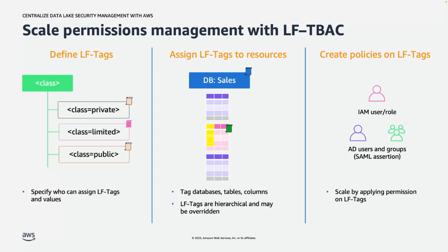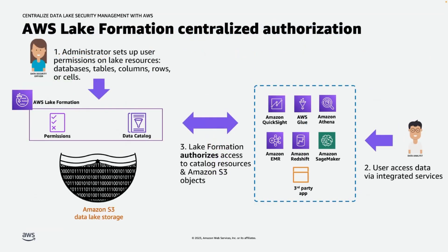Bringing in a centralized authentication model is typically a three-step process. It all starts with the administrator setting up permissions on the various resources in the data lake — this can be either tag-based or resource-based, and tag-based access control is strongly recommended for scaling these operations. When the user tries to access the data via integrated services, Lake Formation comes into picture and authorizes access to catalog resources based on the permissions set by the administrator.